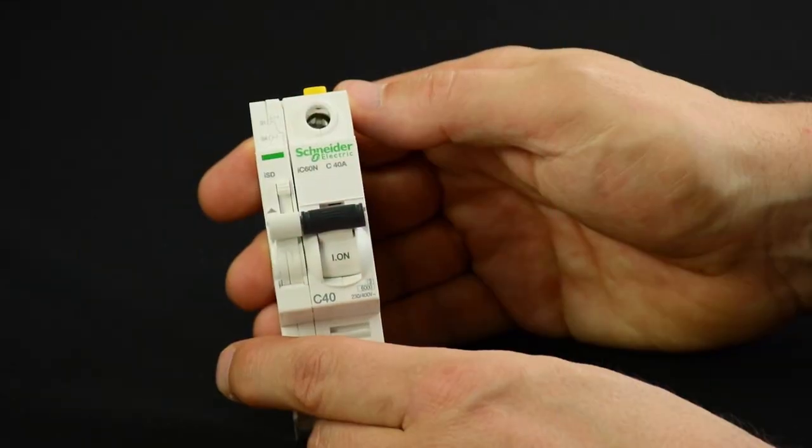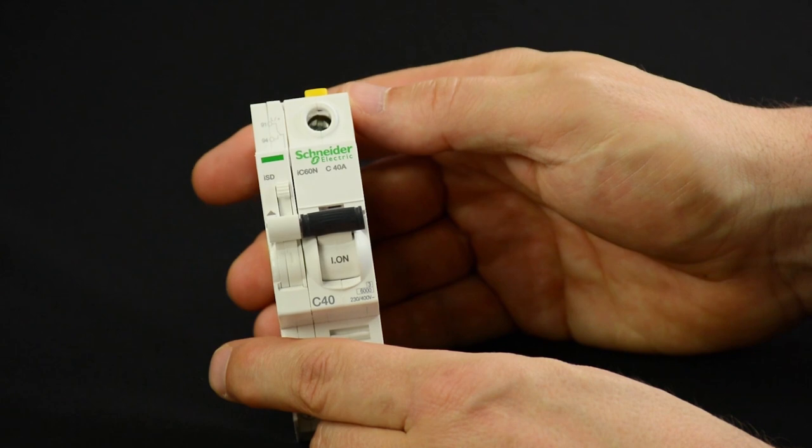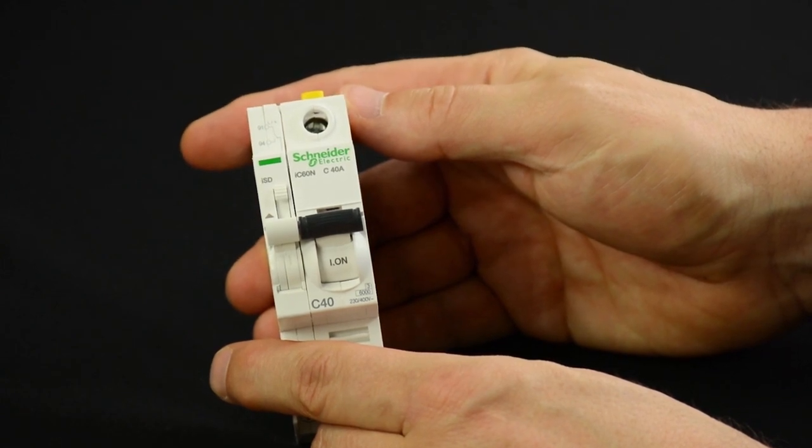The Acti9 ISD is also equipped with a test button that simulates the tripping of the circuit breaker and ensures that the ISD is functional.